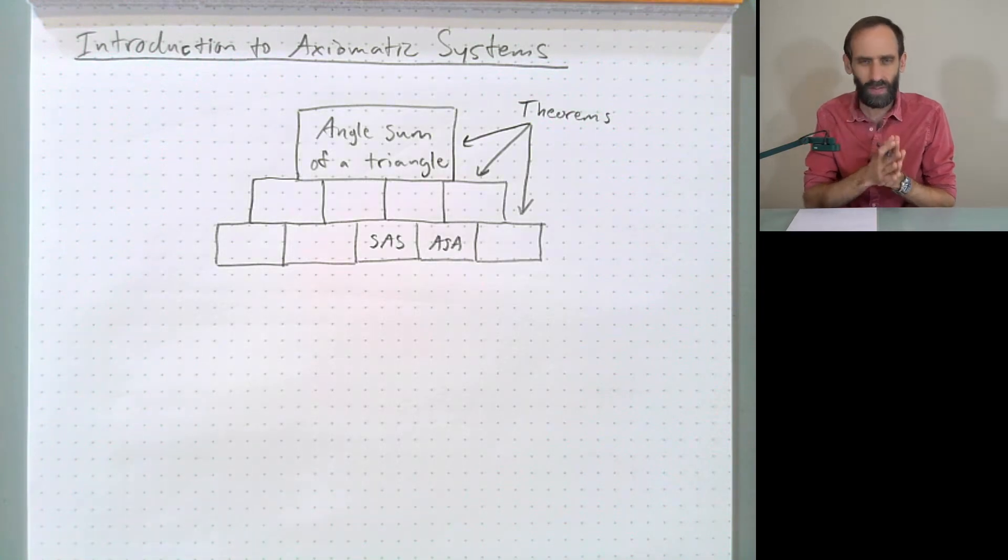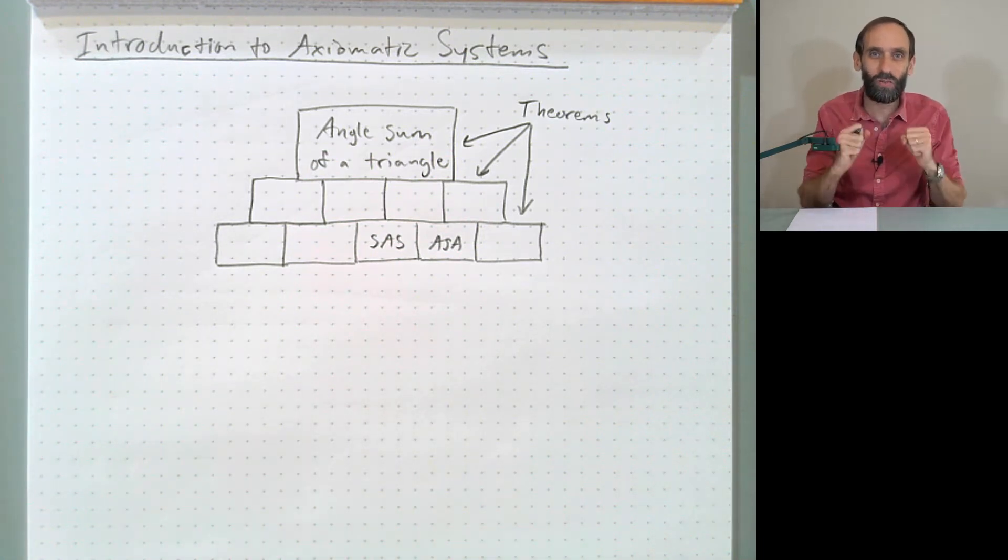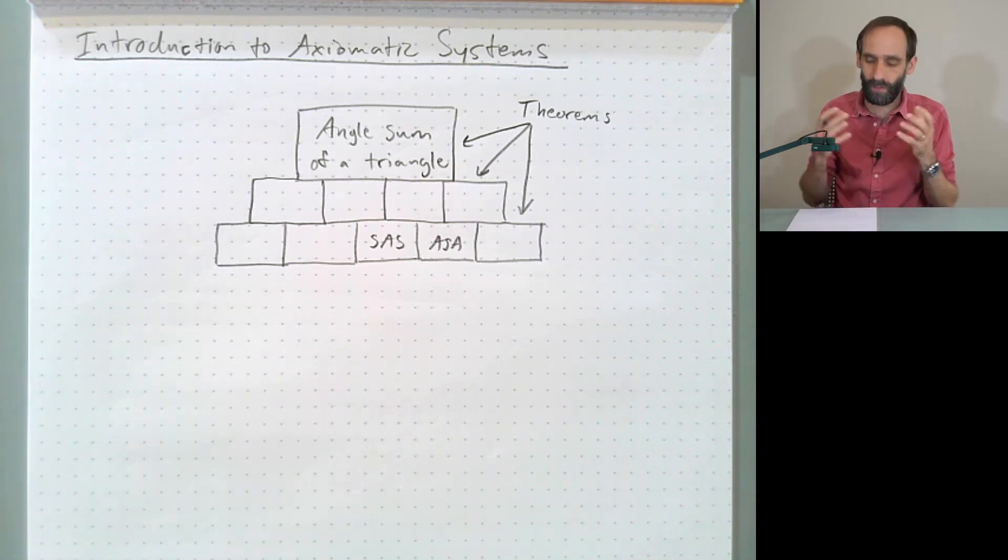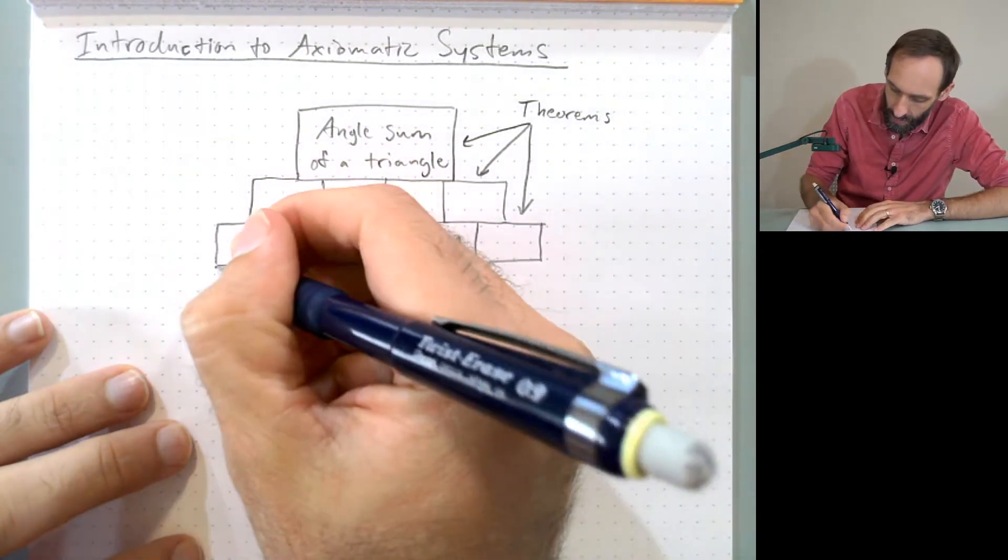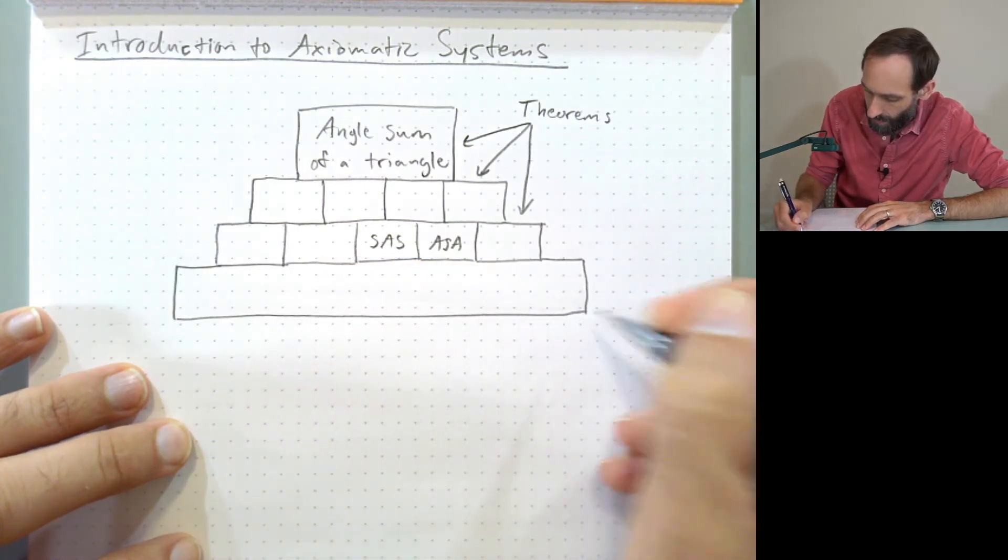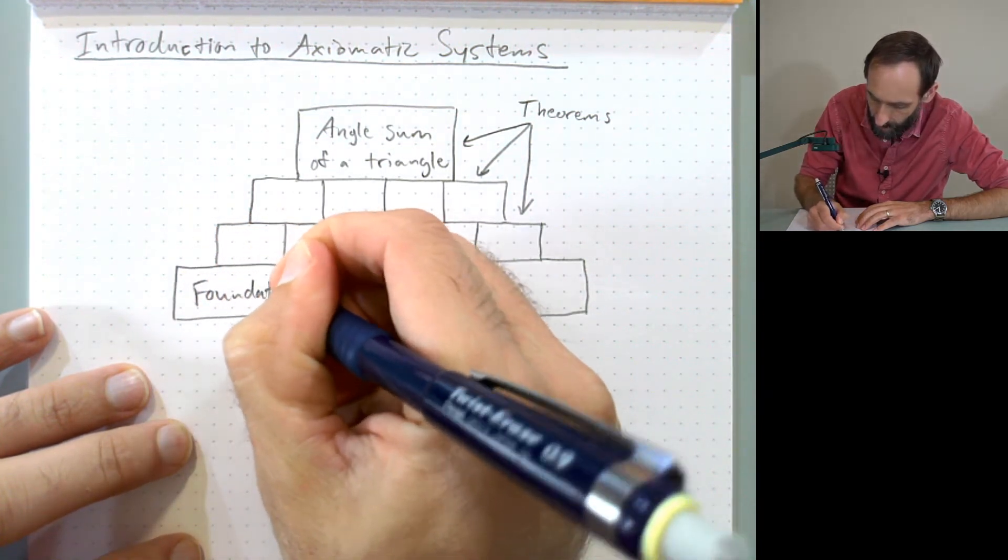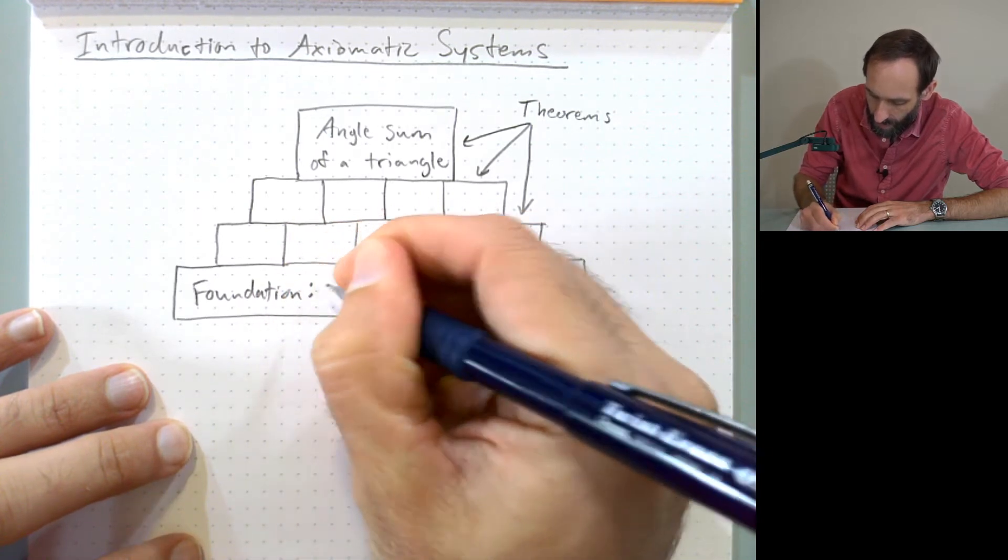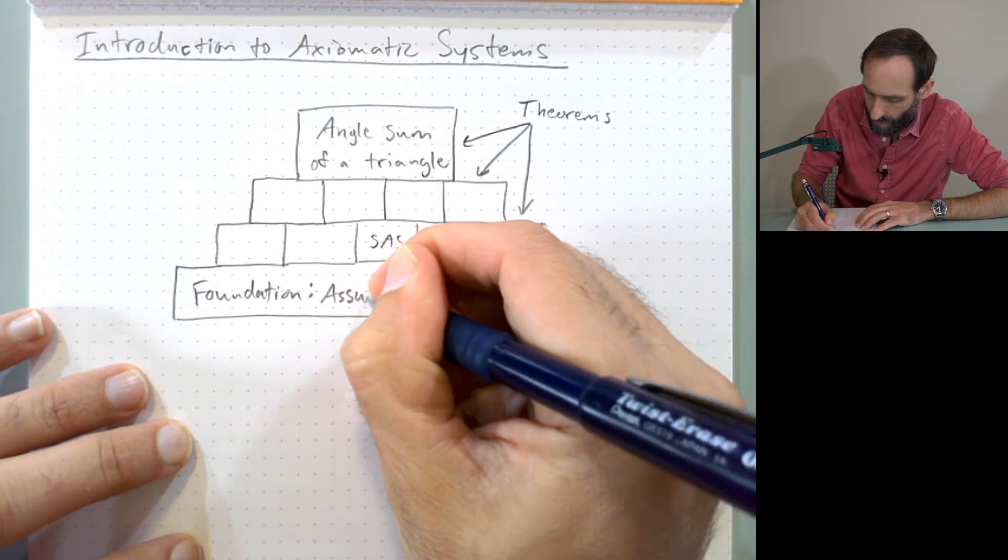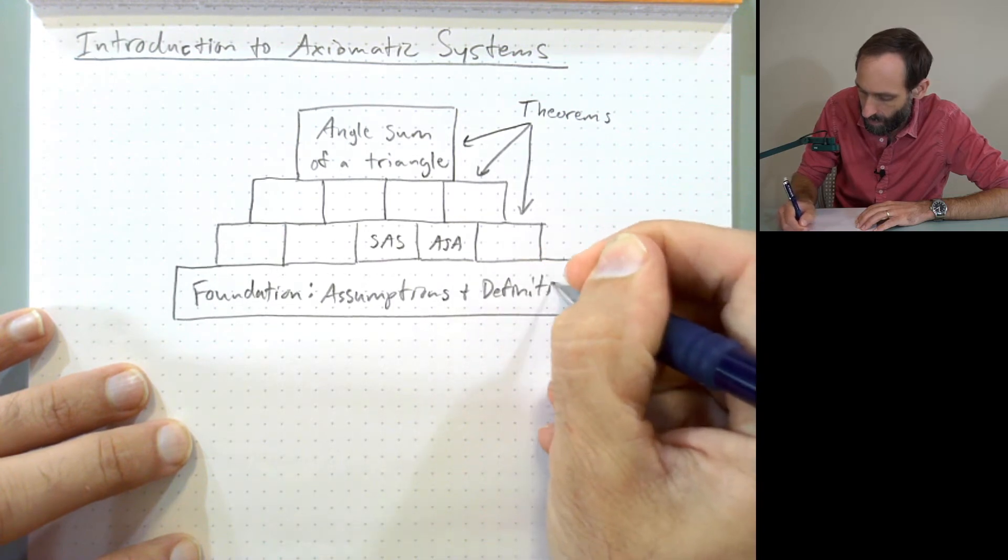But what do these theorems sit on? There has to be a foundation. We can't just have a brick wall sort of floating up in the air, right? There has to be something reliable. There has to be a foundation, a really strong, like the concrete foundations that you'll find under real solidly built brick walls. So underneath all these bricks, we have the foundation. And our foundation for an axiomatic system is assumptions and definitions.